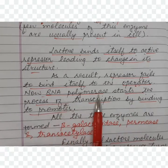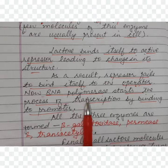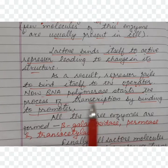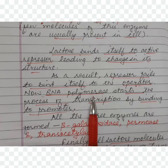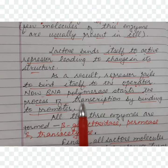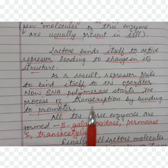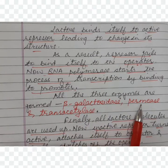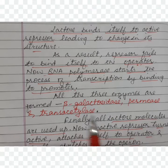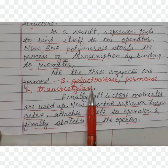Now RNA polymerase starts the process of transcription by binding to the promoter. All three enzymes are then formed: beta-galactosidase, permease, and transacetylase. Finally, all the lactose molecules are used up by the action of these three enzymes.